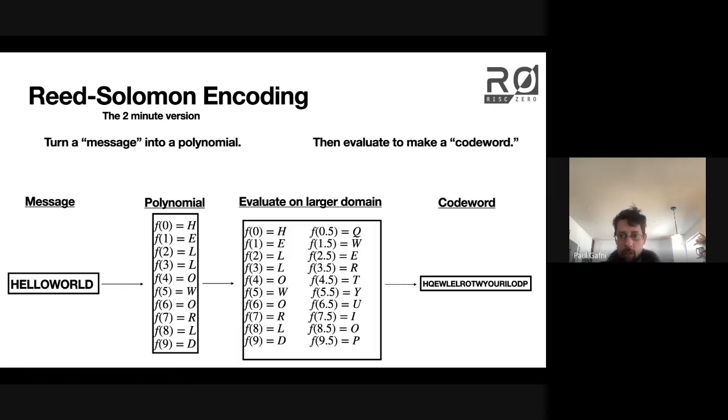Hello world appears as the 1st, 3rd, 5th, 7th, 9th entry here. And the redundancy that was added by evaluating on a larger domain is there in between. Questions about this process?